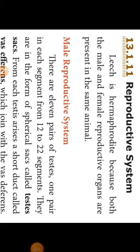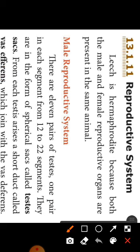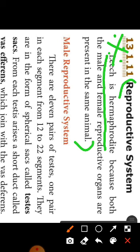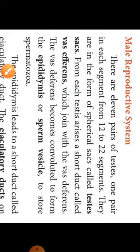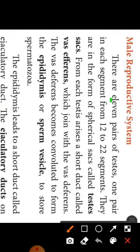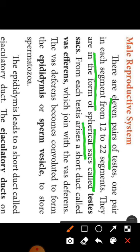Next topic is reproductive system. Leech is hermaphrodite because it has male and female reproductive organs in the same animal. This is why the leech has both characters. Male reproductive system: there are 11 pairs of testes, one pair in each segment from 12th to 22nd segments, totally 11 pairs. They are in the form of spherical sacs called testes sacs.